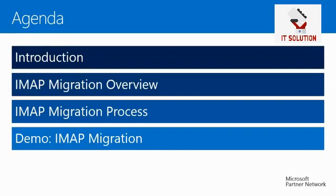This is the agenda for today. We already had our brief introduction. Next we will move into the IMAP migration overview where we will look into the objective, consideration, and requirements. Then we will zoom in on the individual process steps and finish with a demonstration on the IMAP migration. Let's get started.